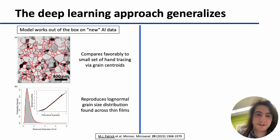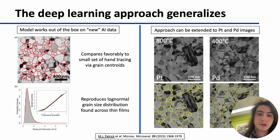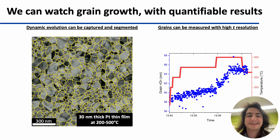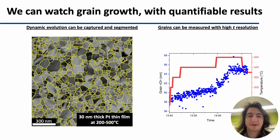Most importantly, the technique generalizes to images of a new aluminum film, as well as new materials like platinum and palladium with minimal retraining. This allows us to dynamically characterize grain growth as it happens in the microscope.